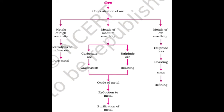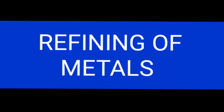अगली metal होगी low reactive metal। जो low reactive metals होते हैं उनके sulfide ores मिलते हैं, तो हमें roasting करना पड़ेगा - excess amount of air में strongly heat करना पड़ेगा sulfide को, और वो oxide में convert हो जाएगा। Metal को refine करना जरूरी होता है क्योंकि उसमें impurities बची होती हैं। Refining of metal: the process of purifying impure metal is called refining of metal.